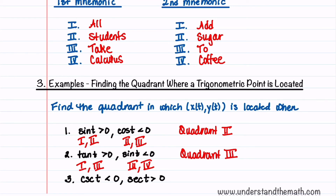For our last problem, cosecant t is negative, which means sine t is negative, and that can happen in quadrants three and four. Secant t is positive, which means cosine is positive, and that can happen in quadrants one and four. So the quadrant common to both of these is quadrant four.